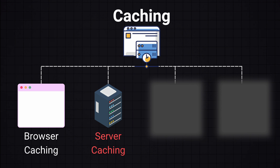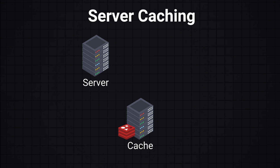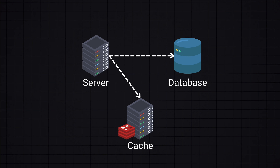We also have server caching, which involves storing frequently accessed data on the server side, reducing the need to perform expensive operations like database queries. Server-side caches are stored on a server or on a separate cache server, either in memory like Redis or on disk. Typically the server checks the cache for data before querying the database — if the data is in the cache it is returned directly, otherwise the server queries the database.